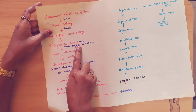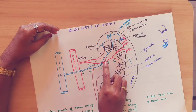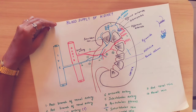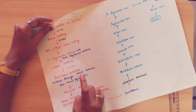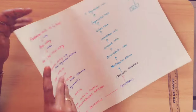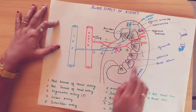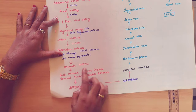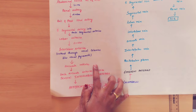Each segmental artery gives rise to a lobar artery, so 1 segmental artery forms one lobar artery. The lobar artery further divides into the interlobar artery, which runs between the pyramids — it is the interlobar artery period.